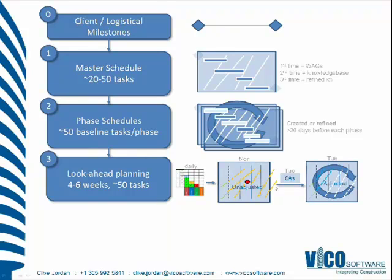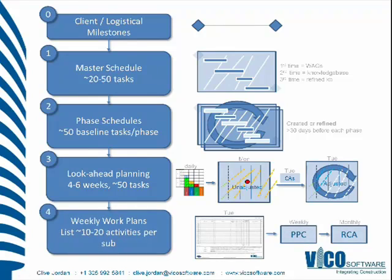Then we have the unadjusted forecast. Based on our completions, we can see deviation from the original target and an extension to the overall period in the look-ahead plan. We can also see forecasting warnings showing disruption in tasks that require control actions. Through the look-ahead process, we use the forecast plus control actions to adjust and show where we hope to maintain production without conflicts. That adjusted forecast is then used to create the weekly work plans.